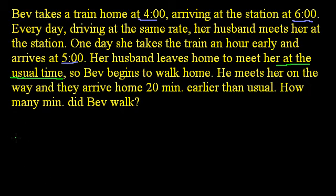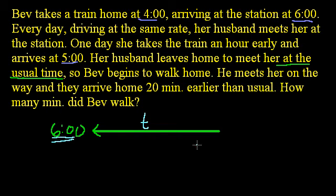Maybe an interesting thing is to think about when does the husband normally leave. So let's say this is a normal scenario. I'll do that in green. At 6 o'clock she arrives at the station. And the husband, he gets there right when she gets there. So when did he have to leave? Let's say it takes him t minutes to get there. If he gets there at 6 o'clock, that means he left at 6 o'clock minus t. If t is 30 minutes it would be 5:30. If t is 1 hour it would be 5 o'clock. So he leaves at 6 o'clock minus t.